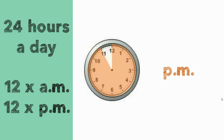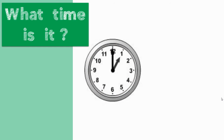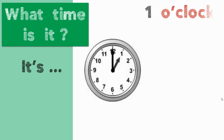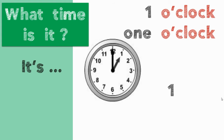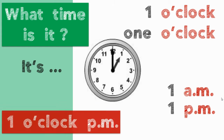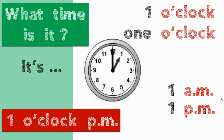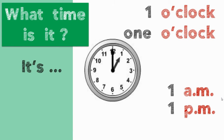What time is it? It is 1 o'clock, or it's 1 a.m. or 1 p.m. Sometimes ESL learners make a mistake saying 'it's 1 o'clock p.m.' We can't use o'clock and p.m. together — that's an error. You can say it's 1 o'clock, or it's 1 a.m., but not both together.